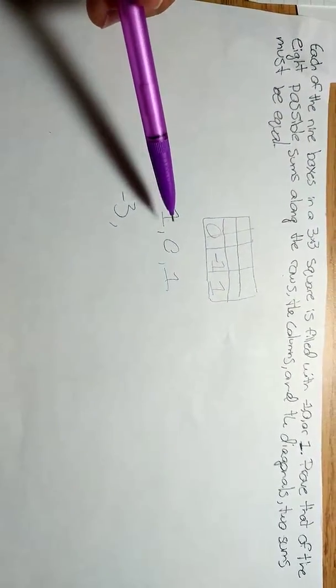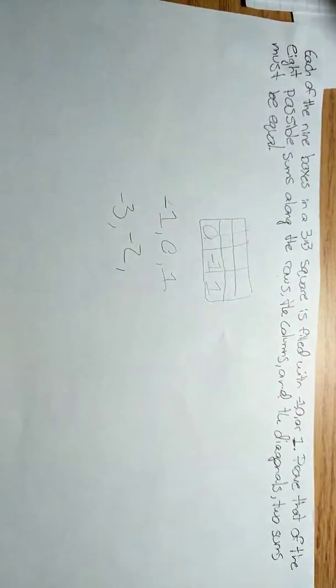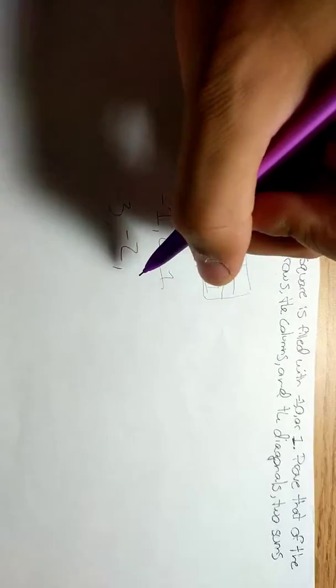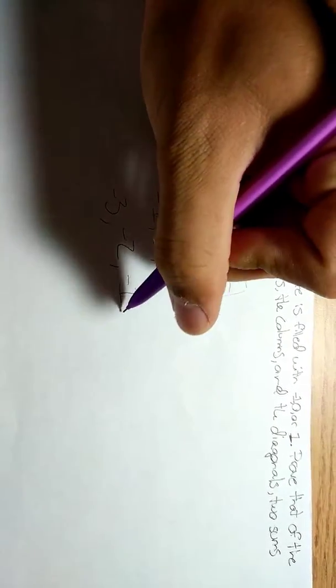Or we could have two negative 1s and one 0, which would give us a total of minus 2. Or we could have one negative 1 and two zeros, which would give us a minus 1.